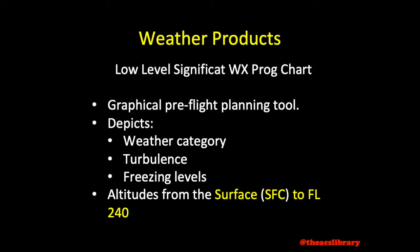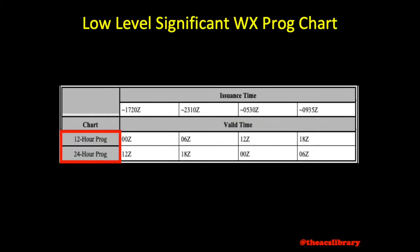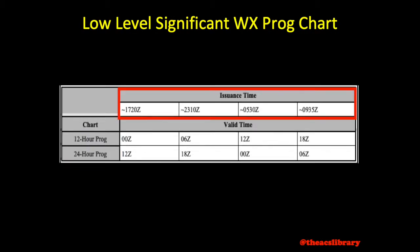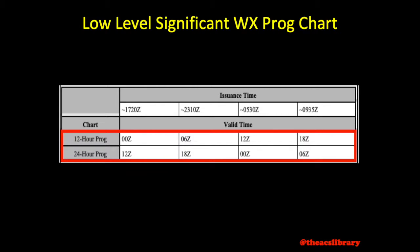Low-level significant weather prognostic charts come in two variables: a 12- or 24-hour forecast. Using Table 5-22 from Advisory Circular 00-45H Aviation Weather Services, we see that both forecasts are issued by the National Weather Service four times daily at 1720 Zulu, 2310 Zulu, 0530 Zulu, and 0935 Zulu. Below that, we see the times at which each report becomes valid.